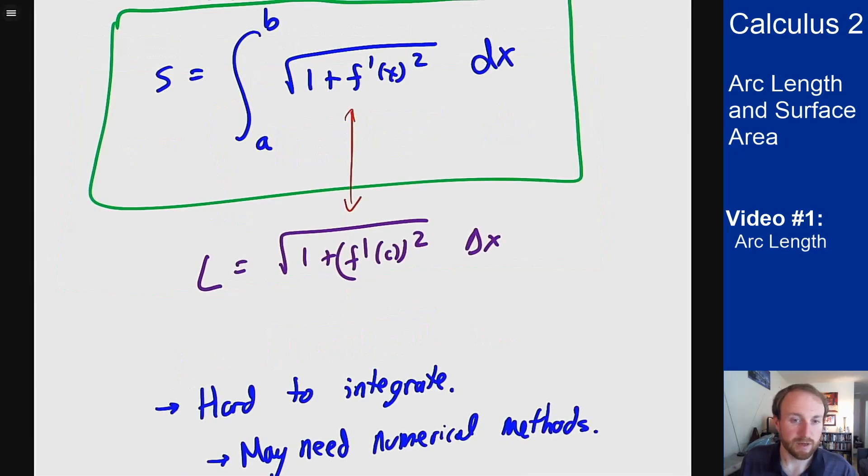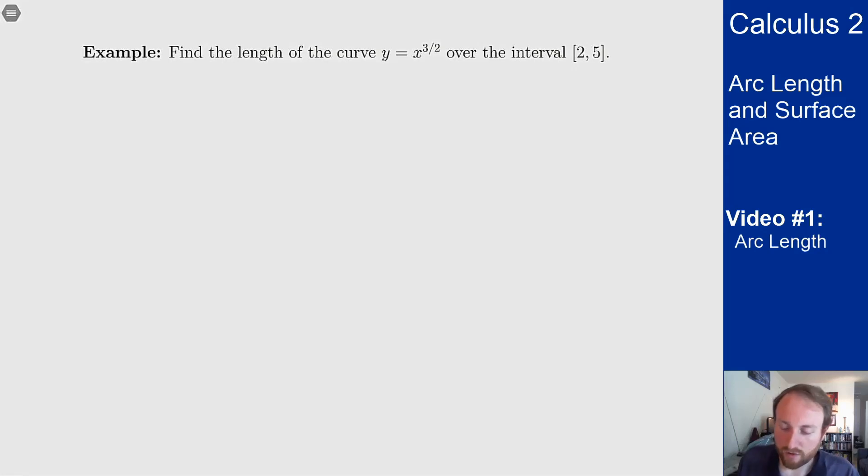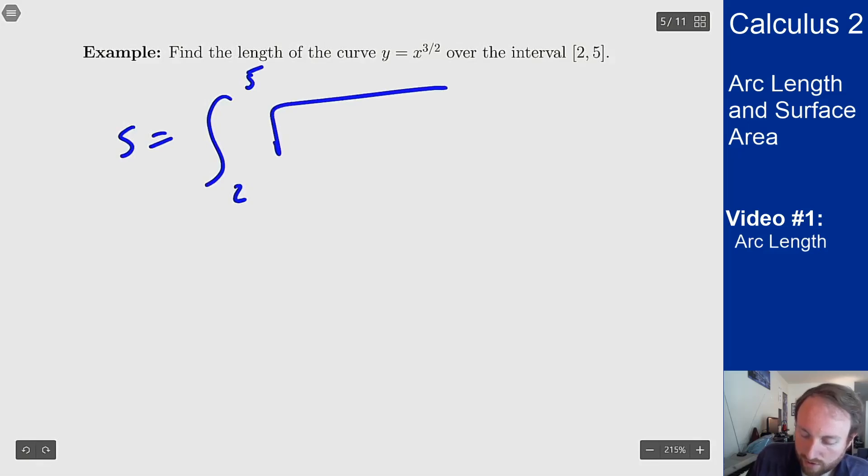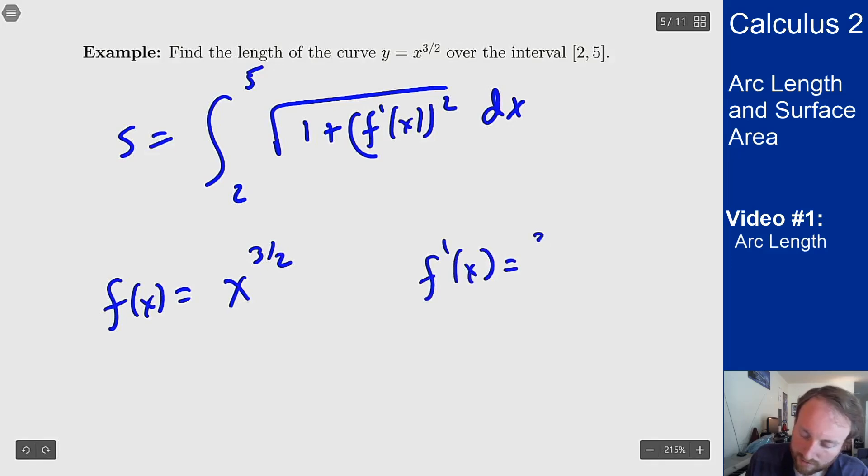Let's look at an example. Find the length of the curve y equals x to the three-halves over the interval from 2 to 5. By our formula, this should be the integral from 2 to 5 of the square root of 1 plus f'(x) squared dx. Here f(x) is x^(3/2), which means f'(x) is (3/2)x^(1/2), so f'(x) squared is (9/4)x.